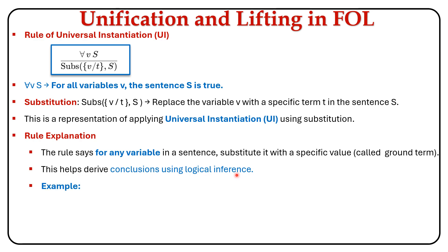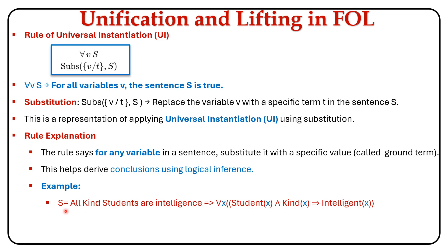Let's have an example. Here, S represents the sentence: 'All kind students are intelligent.' This general sentence is converted into predicate logic, that is first-order logic, as: for all X, student(X) and kind(X) implies intelligent(X).